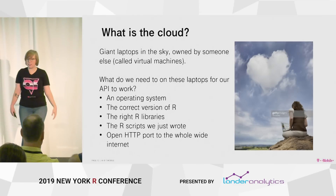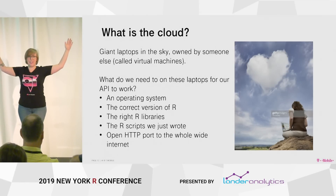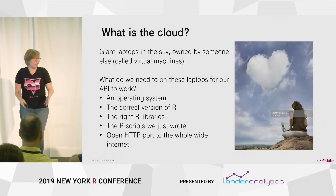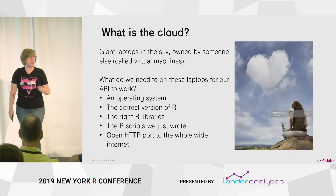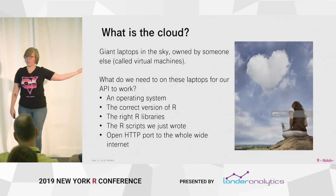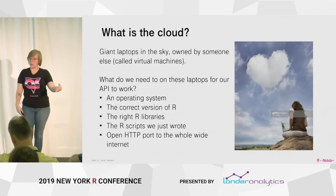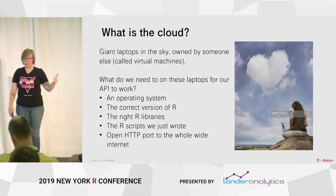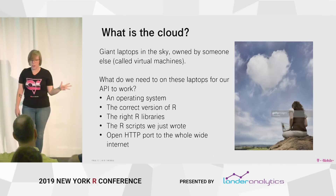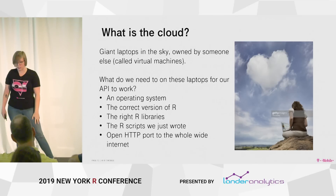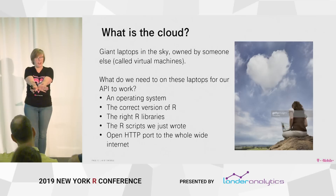The cloud is another thing that engineers say — what does it mean? All the cloud is, is giant laptops in the sky that somebody else owns. So if you have it on your laptop sitting there, you can put it on somebody else's laptop. So what would we need for our API that Jacqueline built to work? We just need an operating system, the correct version of R, all of the libraries that you think that you need, what you just wrote — those three little lines of code and everything that Jacqueline showed you — and then just open a port to the internet.